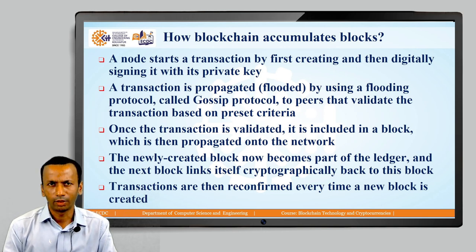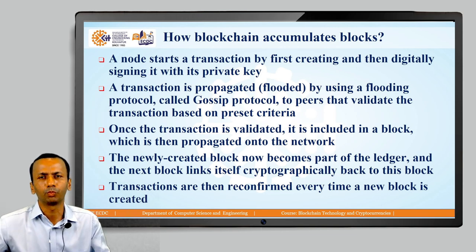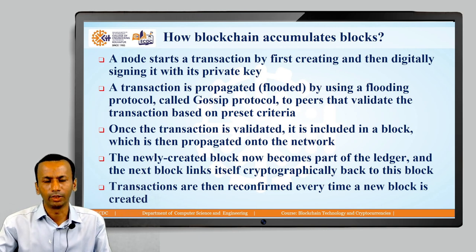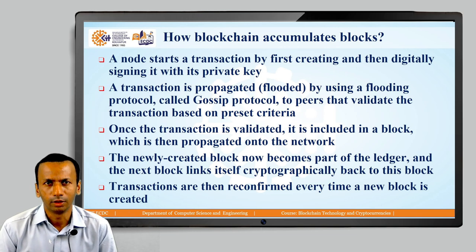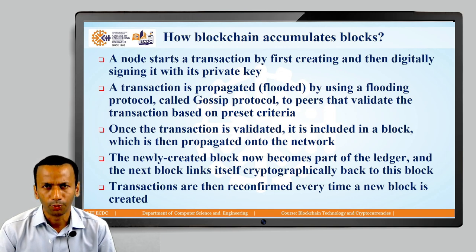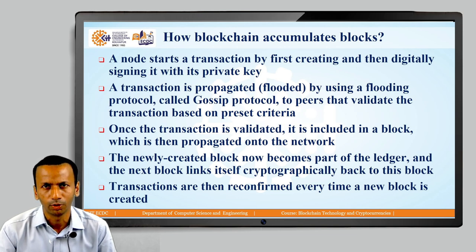The next step is that when the transaction is signed with the private key, this transaction is propagated or flooded across the network using a flooding protocol called the gossip protocol. Each and every node in that particular network validates the transaction received from other nodes based upon the preset criteria.